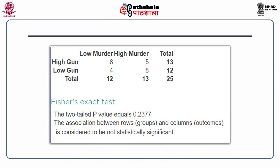The two-tailed p-value for the gun sale data is 0.2377. Since 0.2377 is much higher than our cutoff of 0.05, we conclude there is no reason to reject the null hypothesis — the association is not statistically significant.